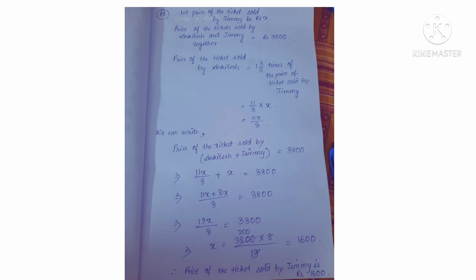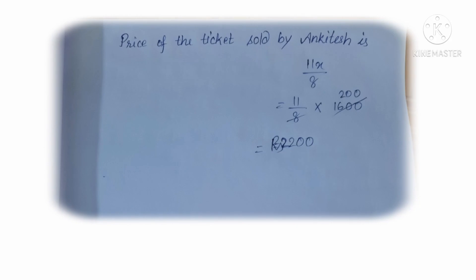We write the equation: 11x by 8 plus x equals 3800. After taking LCM as 8 and solving, the value of x equals 1600. So the price of the ticket sold by Jimmy is Rs. 1600. For Ankitesh, the price is 11x by 8, and substituting x equals 1600, after solving, the price of the ticket sold by Ankitesh is Rs. 2200. Students, if you have any difficulty in the simplification part, you can ask me. Thank you.